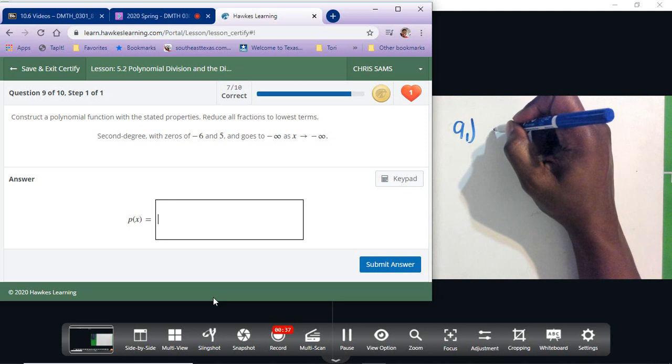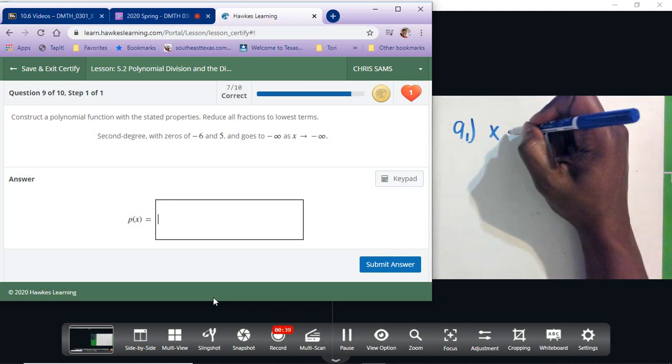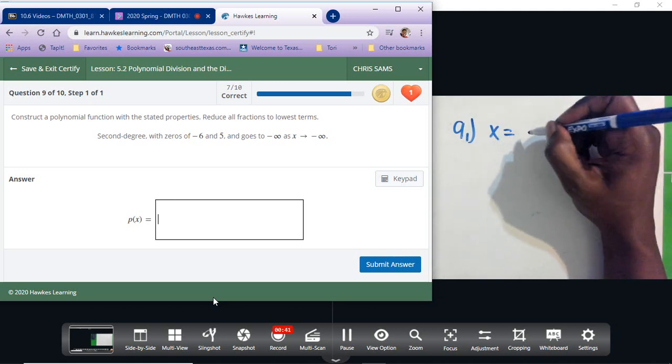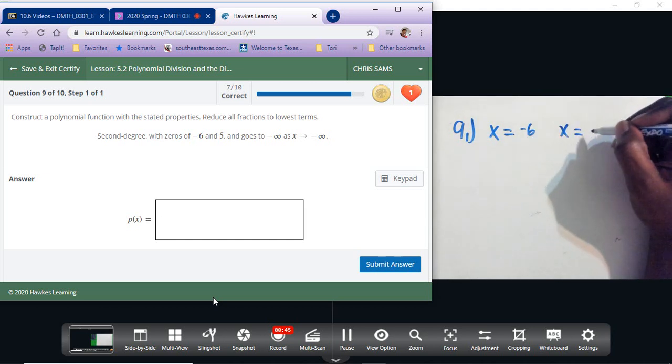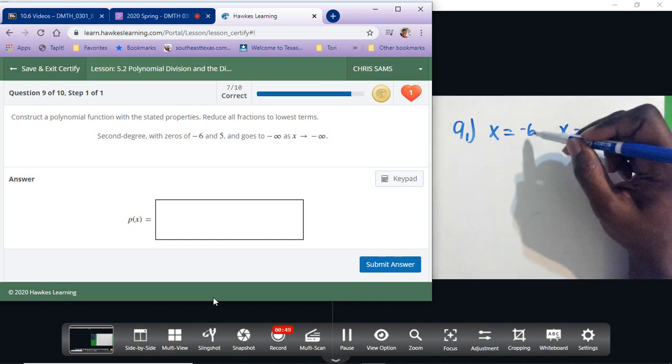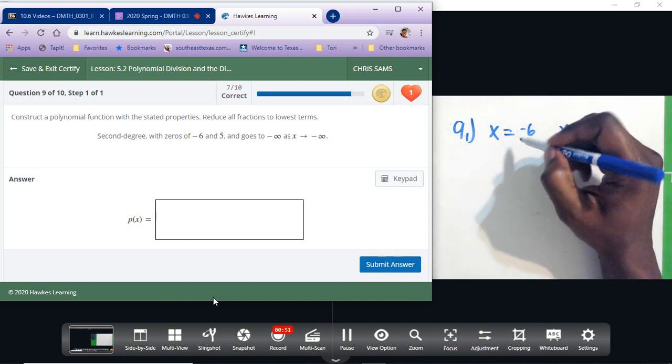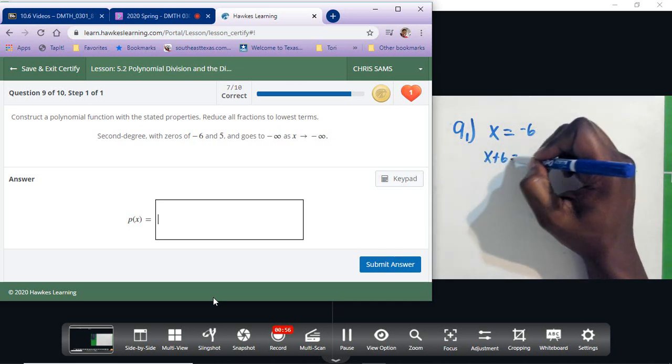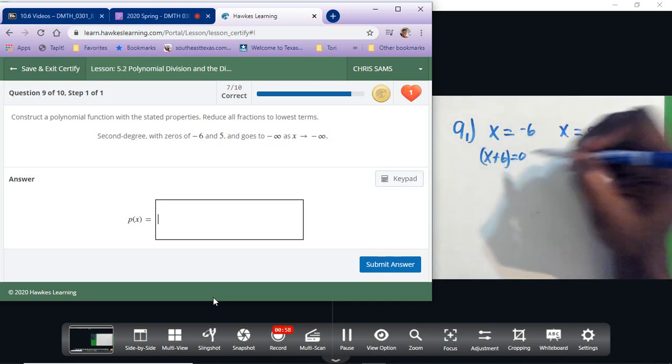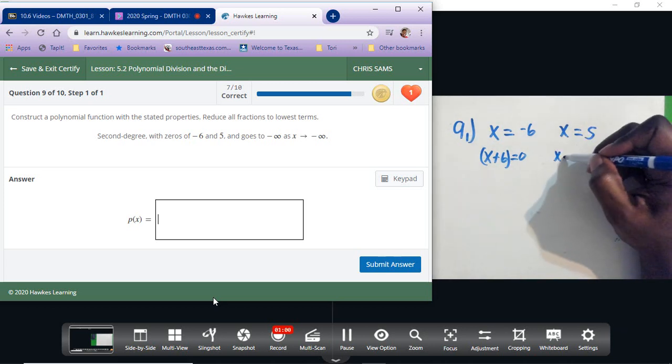You set your x values up, so x equals negative six and we have x equals five. Okay, we're going to set these equal to zero, so we're going to undo them and have it equal to zero. So we'll add six, so have x plus six equals zero, and this will be x minus five equals zero.